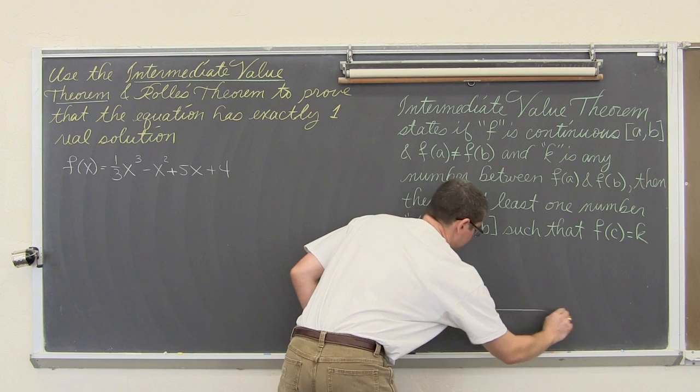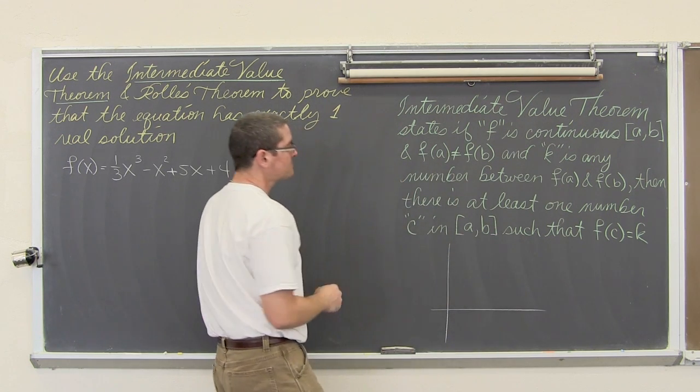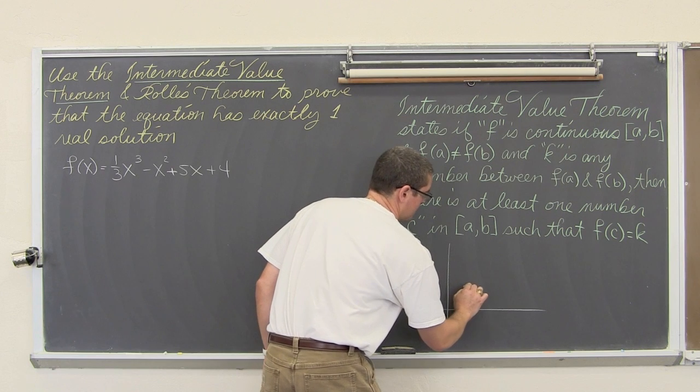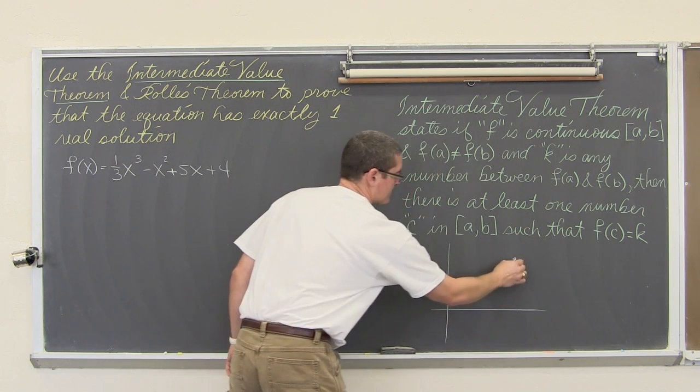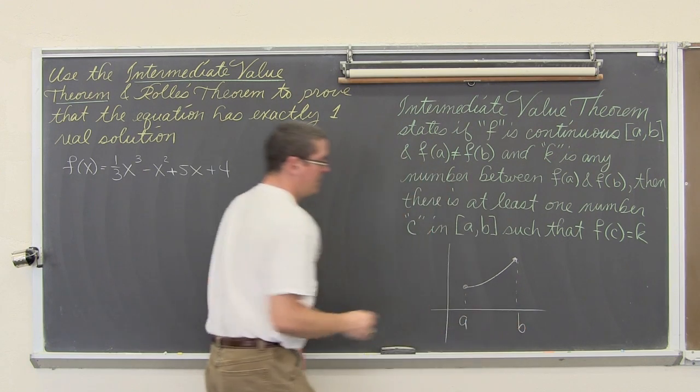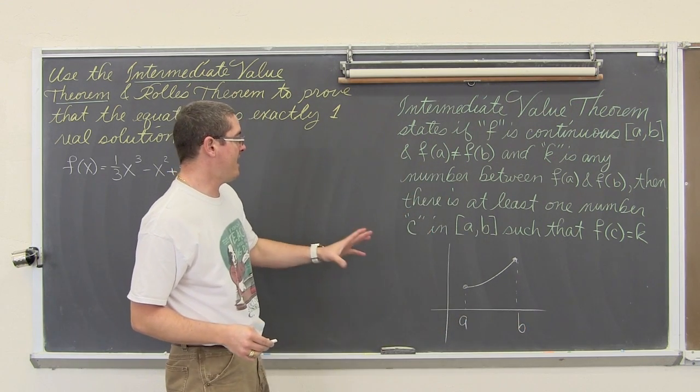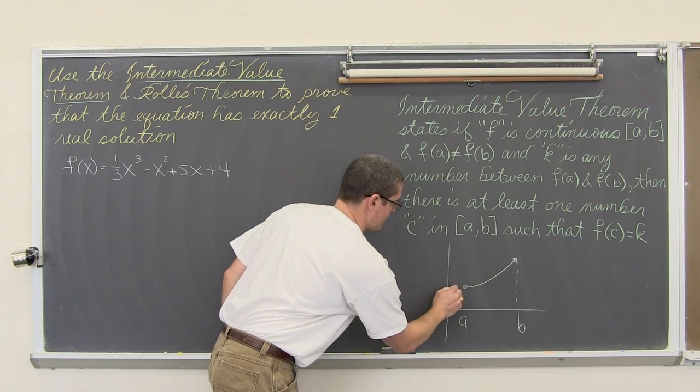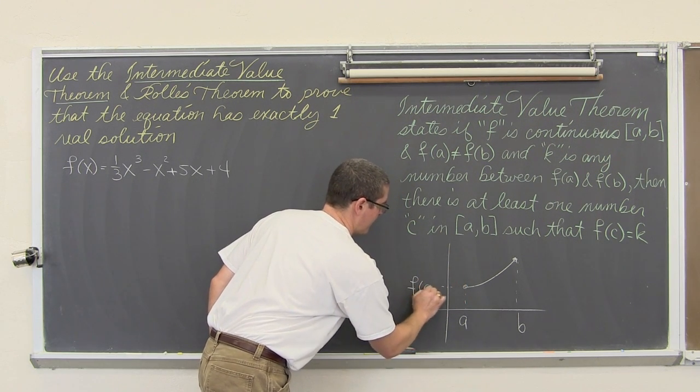And k is any number between a and b. So we have a graph where we have some kind of function. Let's say it looks something like this here. We have a, we have b, we have k.